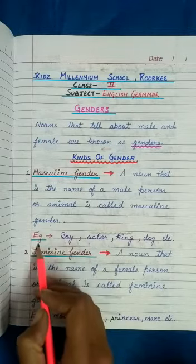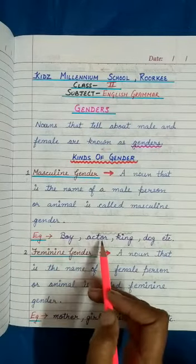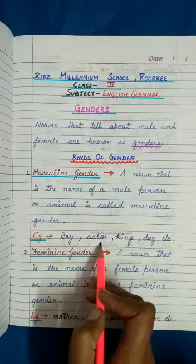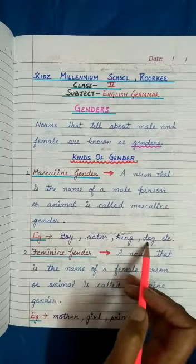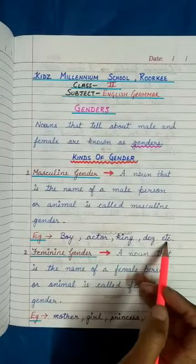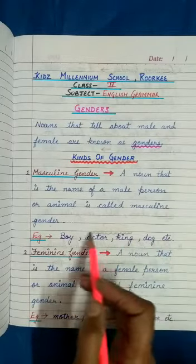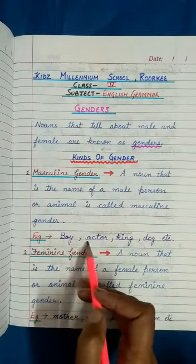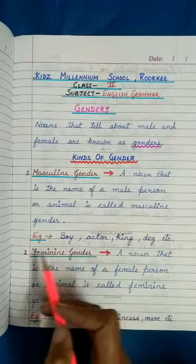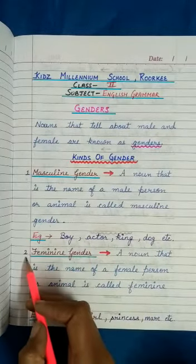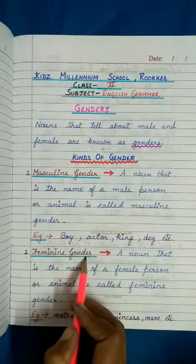Examples of masculine gender: boy, actor, king, dog, etc. ये कुछ examples हैं masculine gender के. Second, feminine gender.